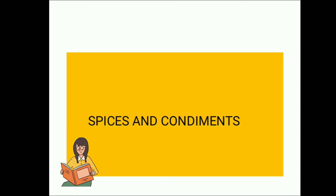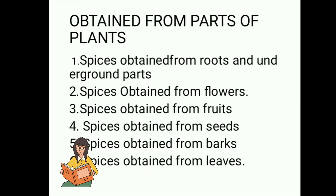Spices and Condiments — obtained from parts of plants. The categories are: 1. Spices obtained from roots and underground parts. 2. Spices obtained from flowers. 3. Spices obtained from fruits. 4. Spices obtained from seeds. 5. Spices obtained from barks. 6. Spices obtained from leaves.